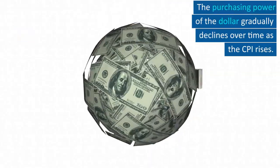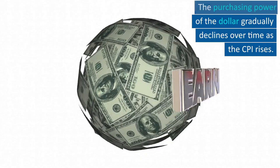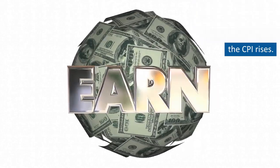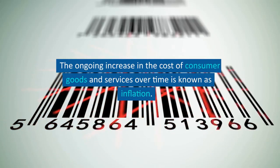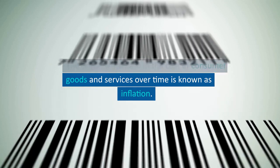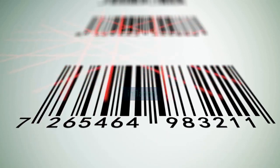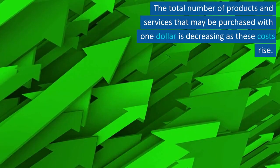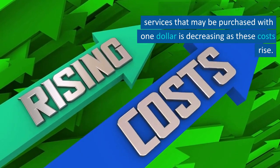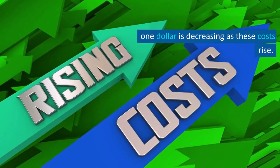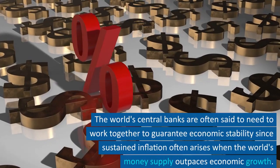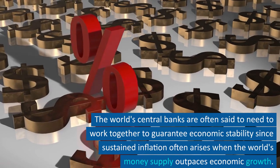The purchasing power of the dollar gradually declines over time as the CPI rises. The ongoing increase in the cost of consumer goods and services over time is known as inflation. The total number of products and services that may be purchased with one dollar is decreasing as these costs rise.